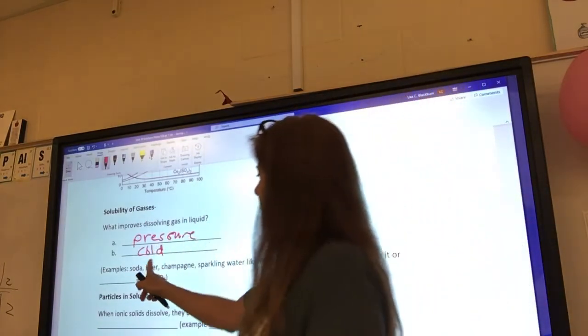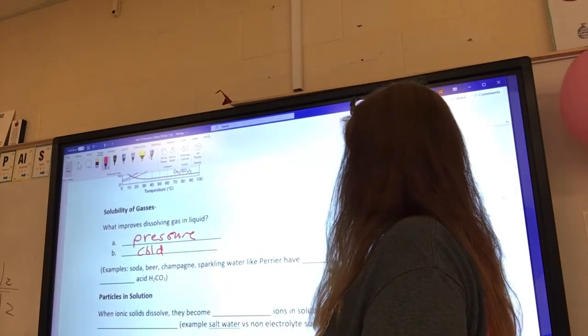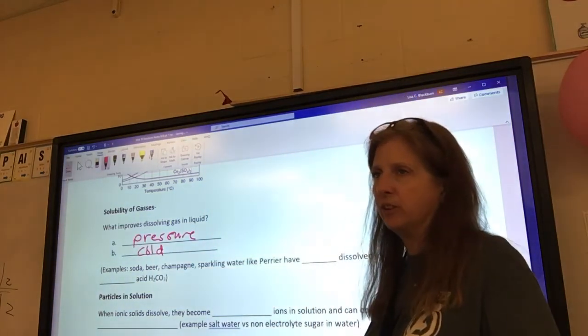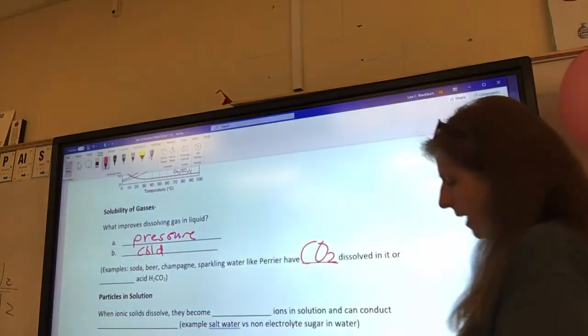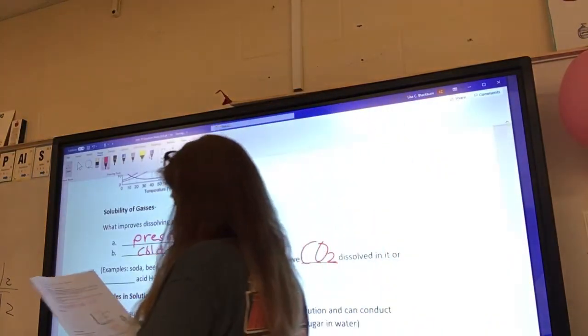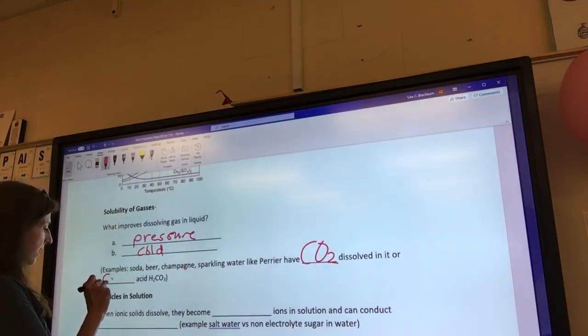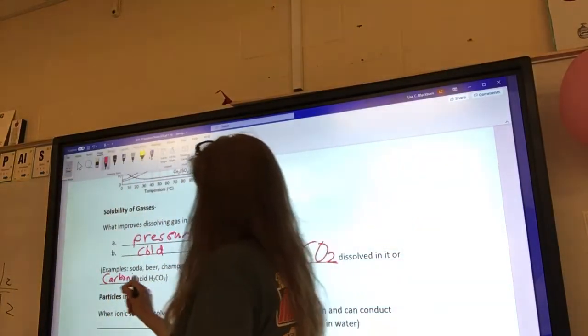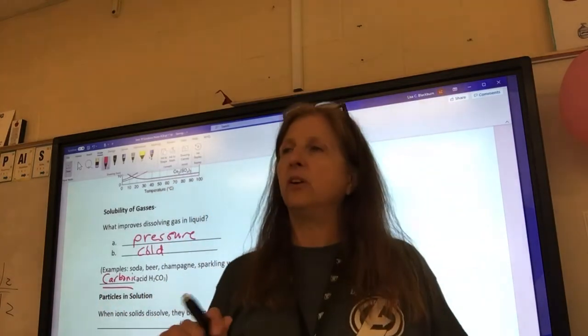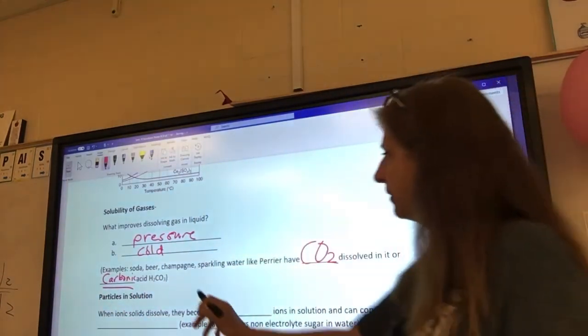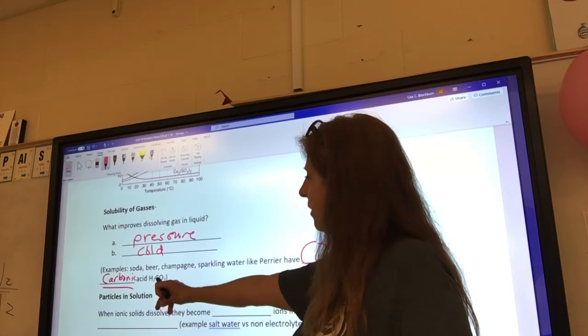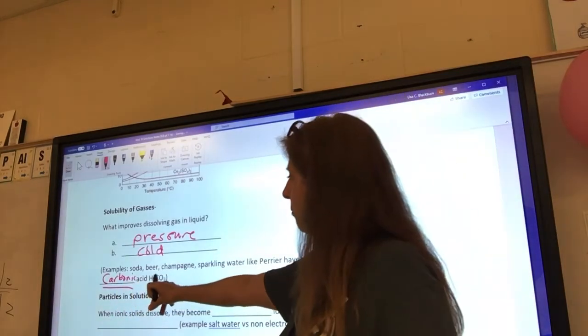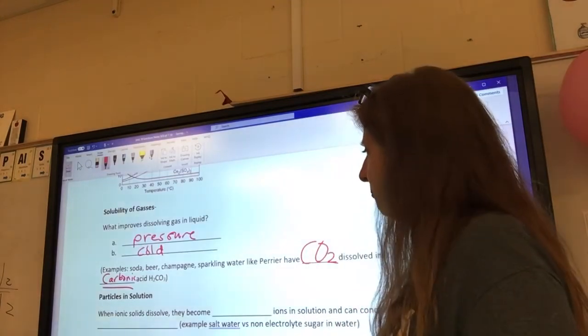For examples, soda, beer, champagne, and sparkling water like Perrier, what chemical do you think they have dissolved into them? It's CO2, carbon dioxide gas, the same thing you breathe out. And also, that CO2 gas becomes carbonic acid in solution. So, a lot of times on your ingredients list for your soda will say carbonic acid and that's what it is. That's the fizz. And see, it's the H's combining with the CO2 makes H2CO3, the water. See how water is added to that there? Two H's at O.